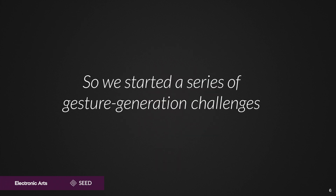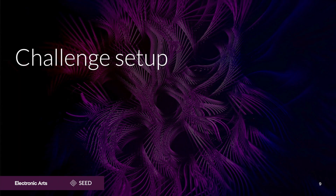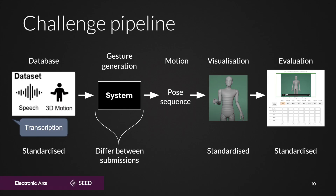To fix this problem, we launched a series of gesture generation challenges. In the 2023 challenge, we considered gesture generation in a two-person conversation. The task was to generate motion for the main agent, shown on the right, given the agent's own speech, as well as the speech and motion of the conversation partner, shown on the left. The idea of the challenge is to standardize all the components for evaluating gesture generation, except for the generating systems themselves, to allow for a direct comparison between different methods. The dataset is the same for all the challenge participants, as is the 3D avatar and the visualization pipeline, and all submissions were evaluated together and in the same way.